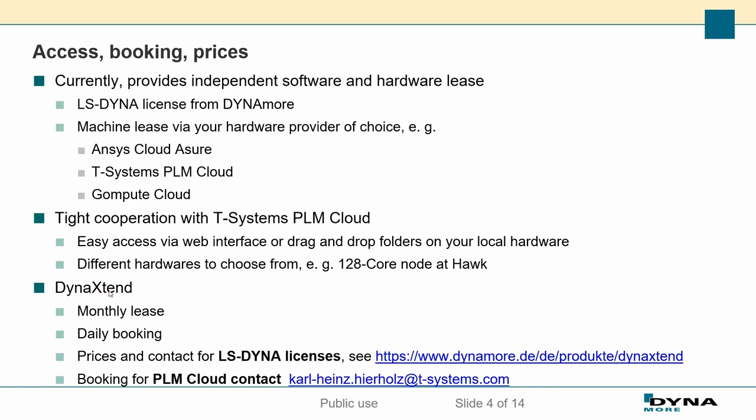A few features related to Dyna Xtend: you can book it on a monthly basis, meaning you can decide you just need more computing power for a month, then book it for a month and extend by another month. You can book it on pretty short notice — two weeks in advance or even one week in advance. Since the product is fairly new, it might not be as streamlined as we want it to be, but we are aiming to make the booking process as fast and streamlined as possible.